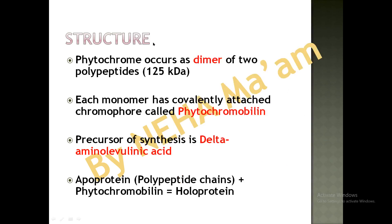Phytochrome mainly occurs as a dimer having two polypeptide chains, each with a molecular weight of 125 kilodaltons. Each monomer has a covalently attached chromophore — the pigment which absorbs light. This chromophore is known as phytochromobilin, and its structure is almost similar to the mammalian bile pigment bilirubin. The precursor for the synthesis of phytochrome is delta-aminolevulinic acid, and the apoprotein plus the chromophore together form the holoprotein, or phytochrome.